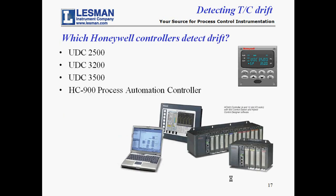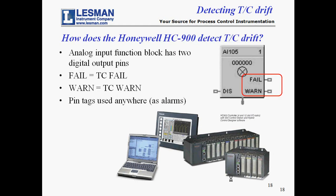Which Honeywell controllers detect thermocouple drift? The quarter-DIN stand-alone PID controllers — the UDC 2500, 3200, and 3500 — can detect thermocouple drift, as well as Honeywell's process automation controller, the HC900, which has modular IO. The HC900 provides two digital output pins on every analog input function block for the TC WARN and TC FAIL functions. The pins can be tagged and used in configuration logic throughout the HC900 and control station HMI panel, typically as alarms.